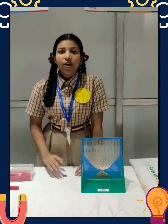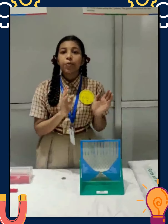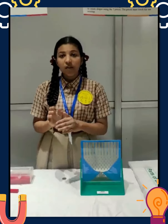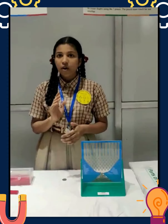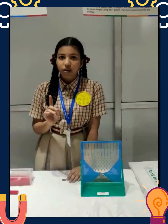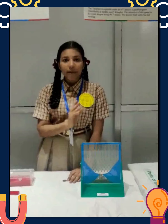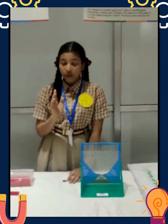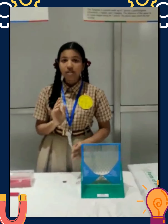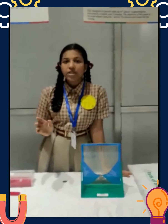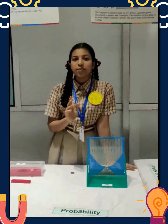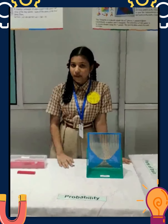But when it comes to a dice, it will not be the same. The probability will be equal to 1 upon 6, because we got only one outcome but the total outcomes will be 6. So the probability is equal to 1 upon 6, which is approximately 0.167, or in percent it is 16.67%.